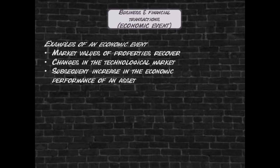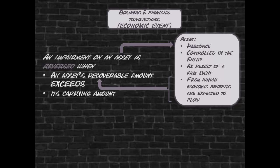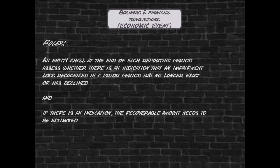It may subsequently happen that an event occurs, such as a recovery in market prices, which may be indicative of a possible recovery in the asset's carrying amount, as the future economic benefits associated with this asset have now recovered. Accordingly, IAS 36 requires an entity to annually consider if there is any indication that an impairment loss or part thereof needs to be reversed.